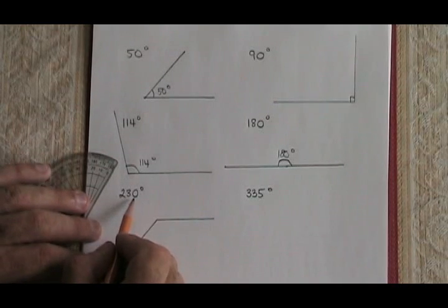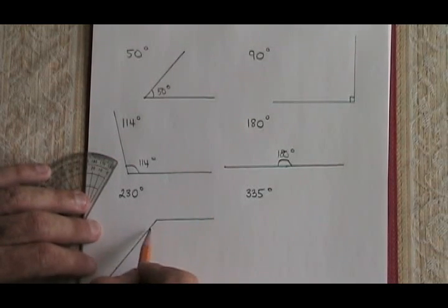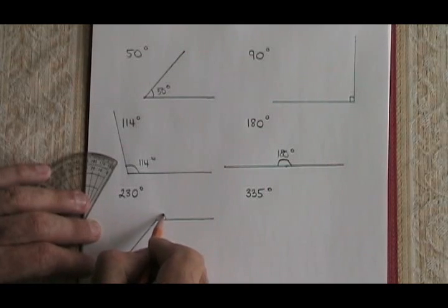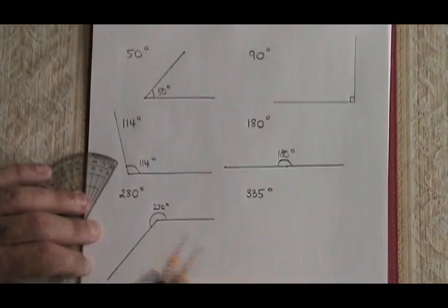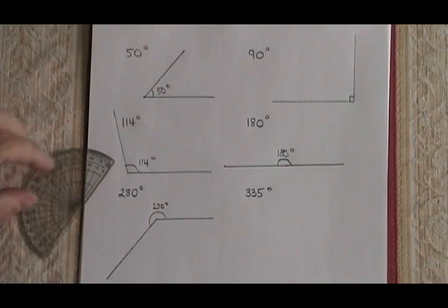230 is what I get if I subtract 130 from the circle. So therefore all I have to do is put this symbol for the angle on the other side. And I must have a 230 degree angle.